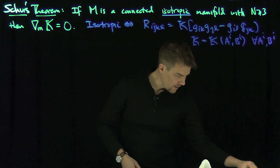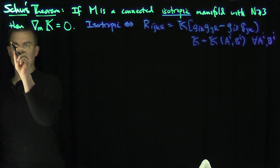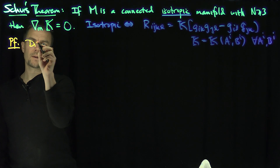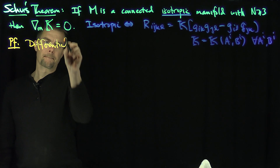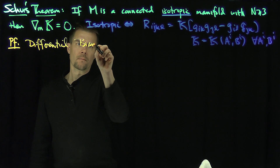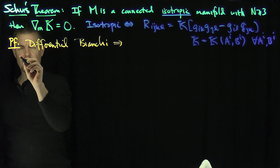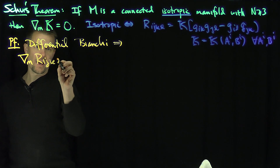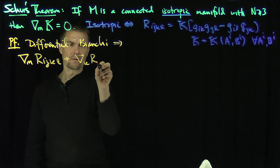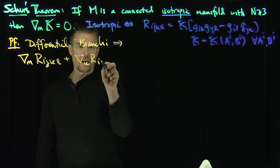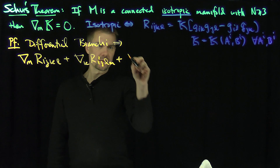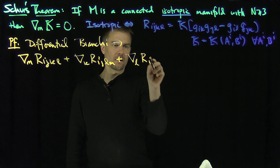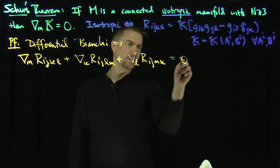All right, so now I need a couple of different things to prove this. The proof goes as follows. Let's recall the differential Bianchi identity. The differential Bianchi identity implies that the m-covariant derivative of R_ijkl, plus the k-covariant derivative of R_ijlm, plus the l-covariant derivative of R_ijmk is equal to zero.